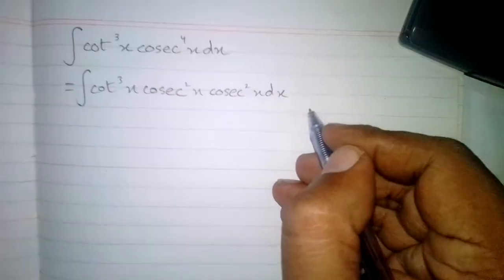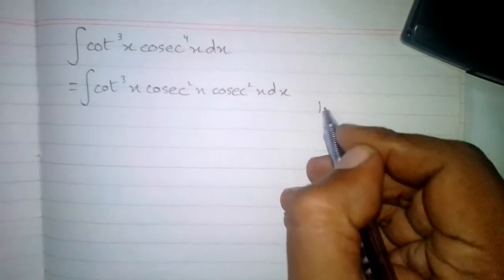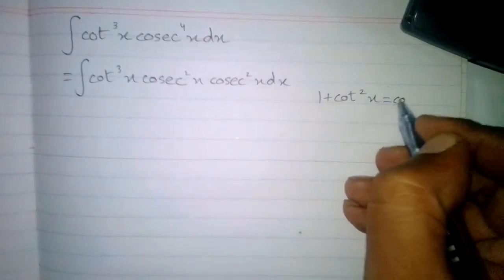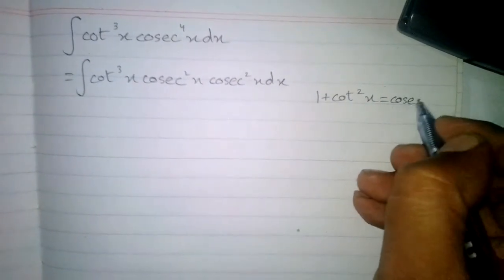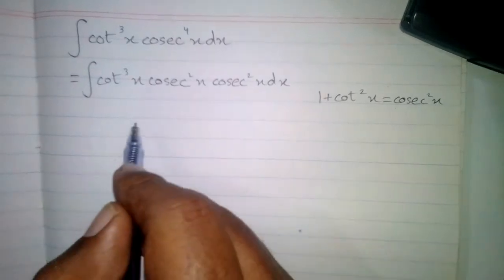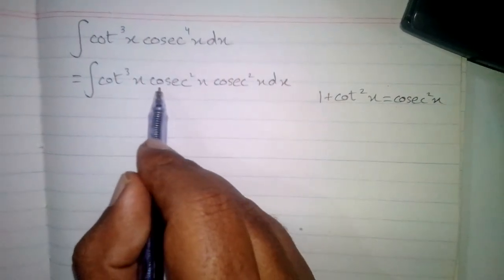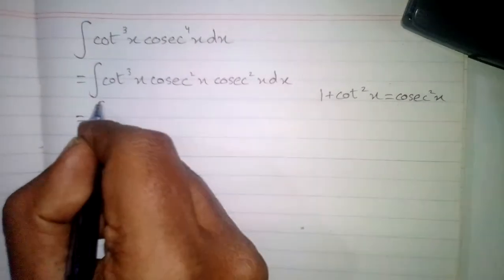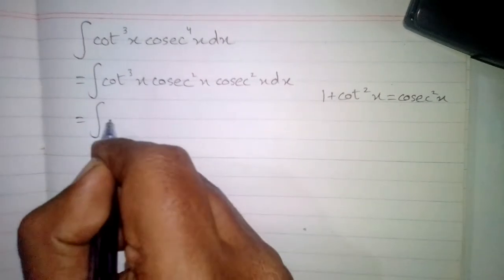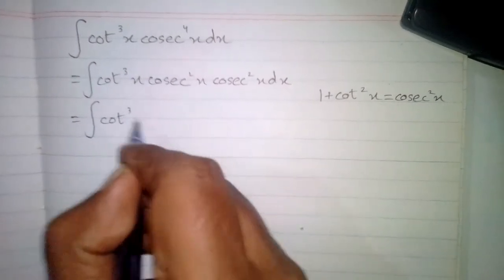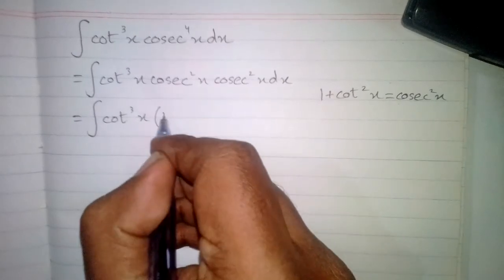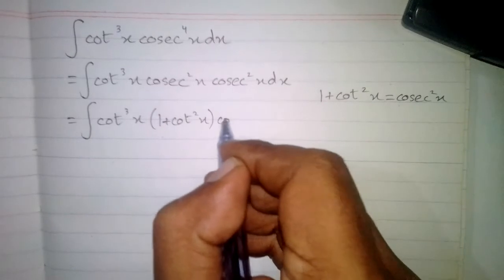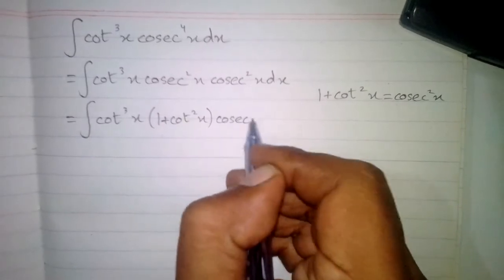Now we can write 1 plus cot square x is equal to cos square x. We will put 1 plus cot square x in place of this cos square x. So we have integral of cot cube x times 1 plus cot square x times cos square x dx.